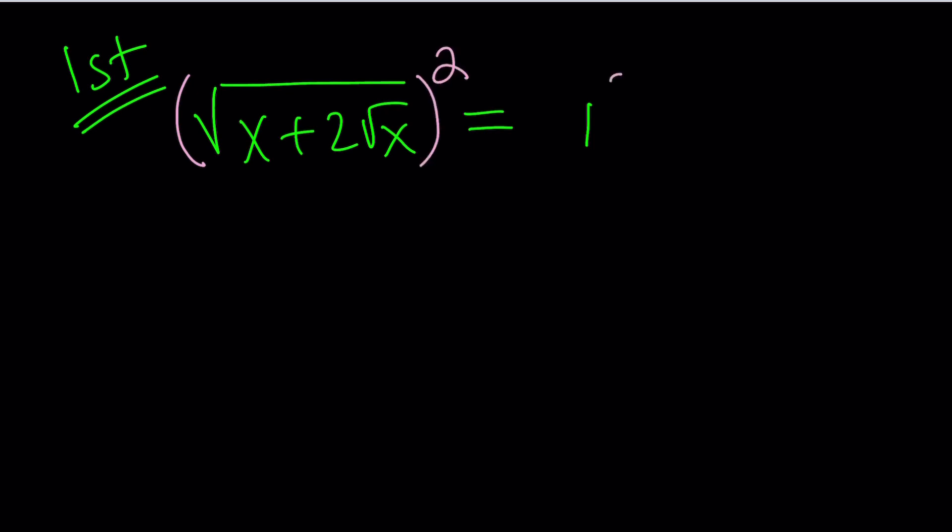First, I'm going to solve it the same way that he did in his video, and then I'm going to show my alternative method. We have the square root of x plus 2 times the square root of x equals 1. Since we have a radical equation, we're going to go ahead and square both sides. That's pretty standard, right? So that gives us x plus 2 times the square root of x equals 1.